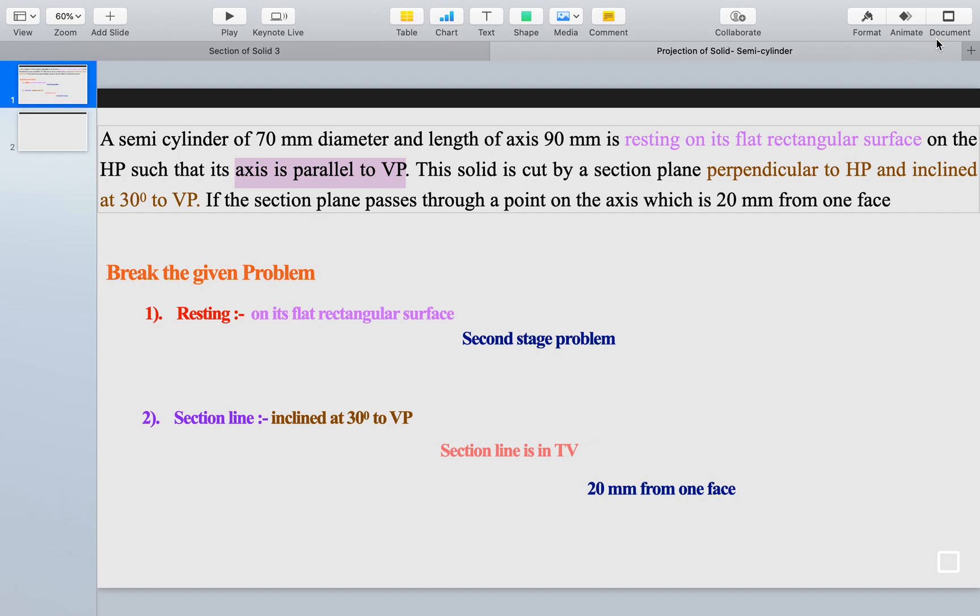Now, if a section line makes an angle to the VP, it must be present in top view. Because they have mentioned that 30 degrees to the VP means the section line belongs to top view. The angle is 30 degrees, they have mentioned.